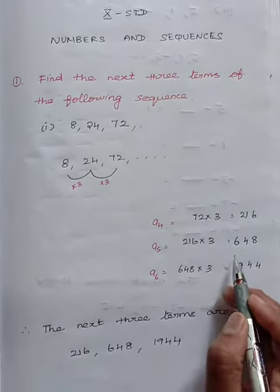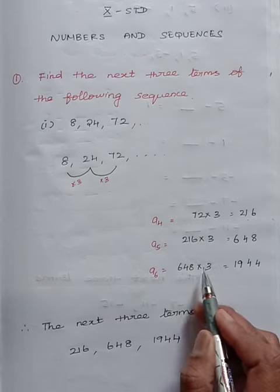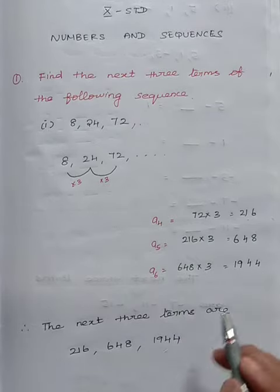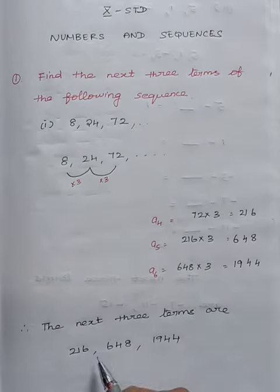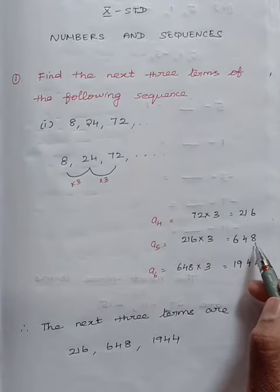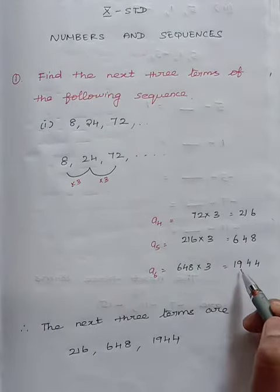216 times 3, 648. 648 times 3, 1944. Therefore the next 3 terms are 216, 648, 1944.